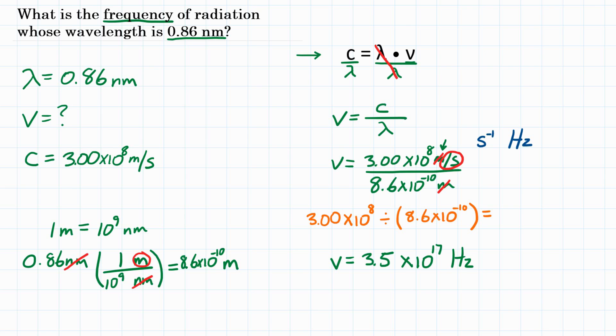Make sure that you have 3.5 times 10 to the power of 17. Because if you have a different power of 10 there, your calculator probably did the order of operations in a different way, which would be incorrect. So make sure you have that same power. Okay, so final answer. What is the frequency of radiation whose wavelength is 0.86 nanometers? That would be 3.5 times 10 to the 17th hertz.